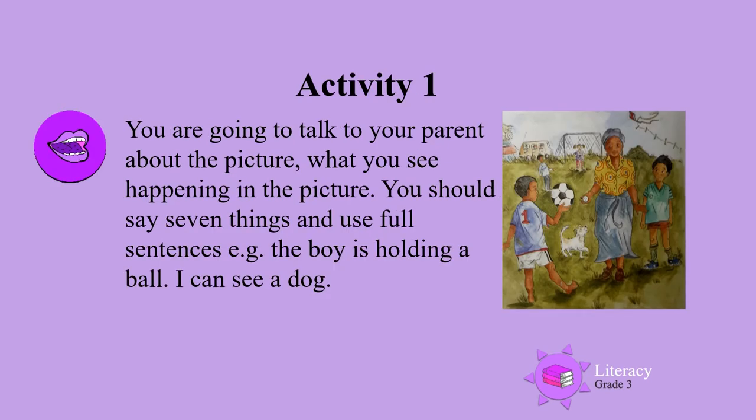Activity 1. You're going to talk to your parent about the picture. Talk about what you see happening in the picture. You should say seven things and use full sentences. For example, you could say 'The boy is holding a ball,' or you could say 'I can see a dog.'